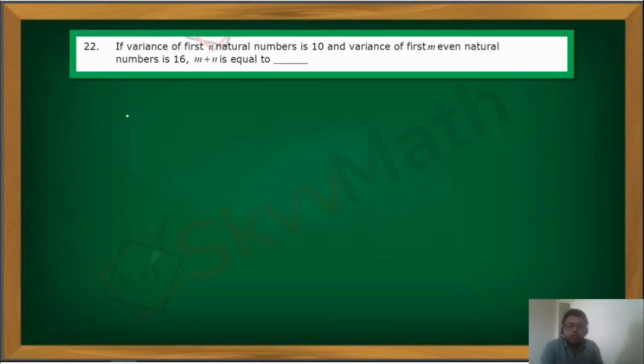If the variance of the first n natural numbers is 10 and the variance of the first m even natural numbers is 16, then we have to find out what is the value of m plus n.